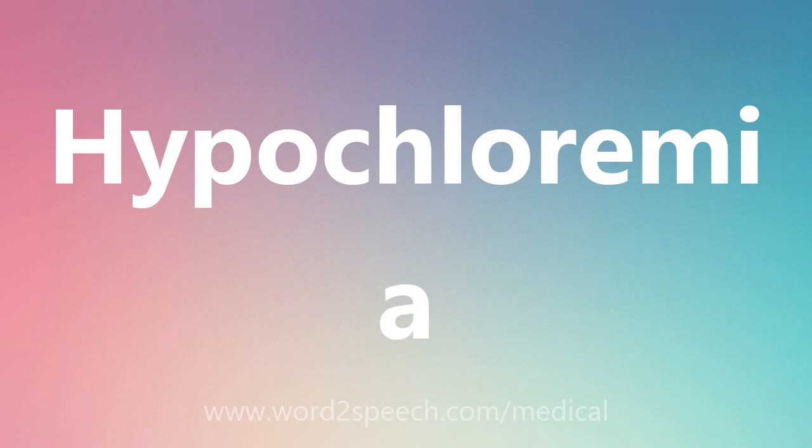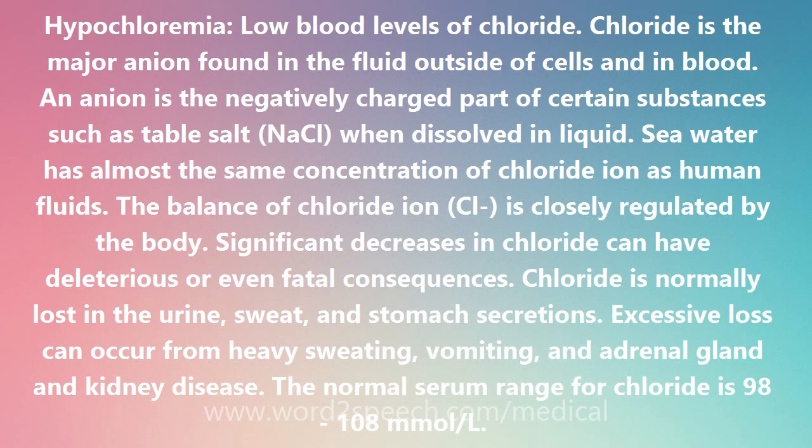Hypochloremia: low blood levels of chloride. Chloride is the major anion found in the fluid outside of cells and in blood. An anion is the negatively charged part of certain substances, such as table salt (NaCl), when dissolved in liquid. Sea water has almost the same concentration of chloride ion as human fluids.